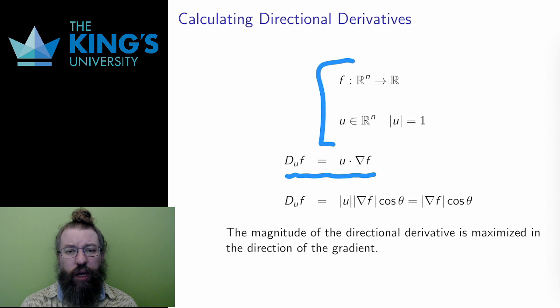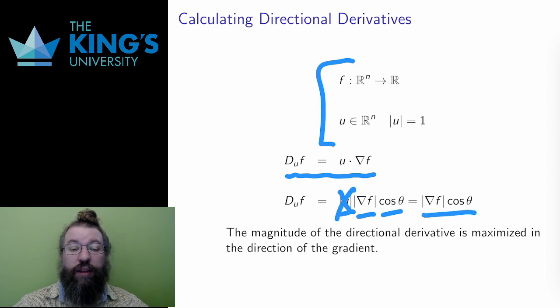Think about the rules of the dot product for a moment. The value of the dot product is equal to the length of the two vectors times the cosine of the angle between them. u is a unit vector, so it has length 1, so only the length of the gradient and the cosine remain.